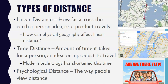When talking about location, we also think about types of distance. Physical geography affects linear distance by forcing a shift in a route to avoid impassable land or water. Linear distance is how far across the earth a person, idea, or product travels. Time distance is the amount of time it takes for a person, idea, or product to travel. Modern technology has really shortened time distance — in the 1800s, pioneers would travel up to six months to reach California, but today you can get there by plane in under six hours. With the internet, ideas can travel around the world in seconds.